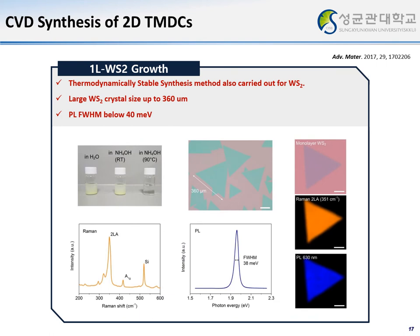Using the same proposed strategy, we also synthesized WS2 crystals. WO3 was dissolved in ammonium hydroxide solution, and we achieved crystal sizes up to 360 micrometers, with very sharp PL peaks indicating that the synthesized WS2 monolayer is a very high-quality crystal.